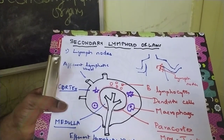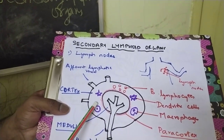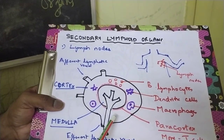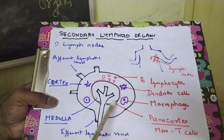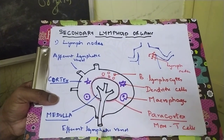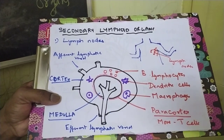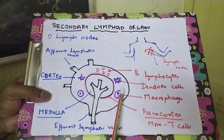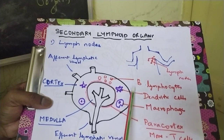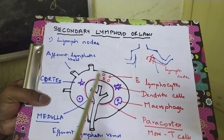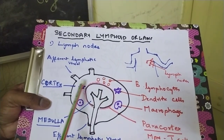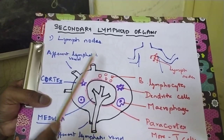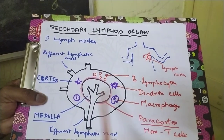Sometimes we do have infections in the lymph nodes, called lymphadenopathy — swelling of the lymph nodes — because it is also an organ that can get infected. Immune cells are present inside the organ as a reservoir, which is why it is called a secondary lymphoid organ.